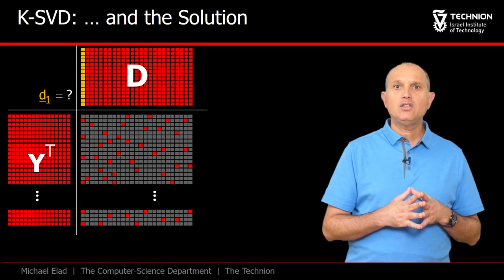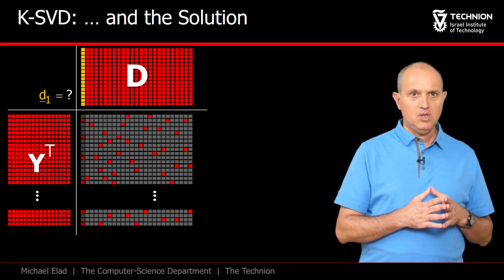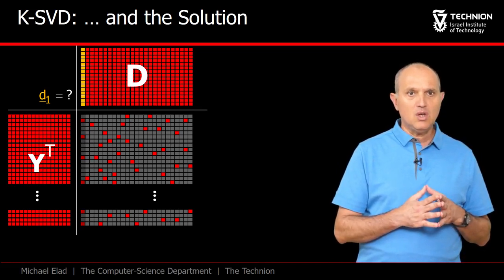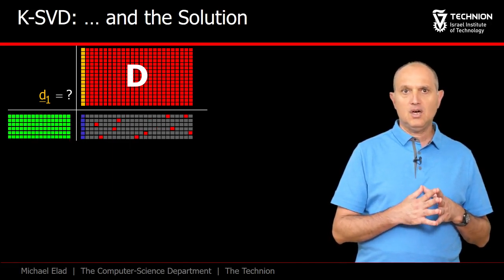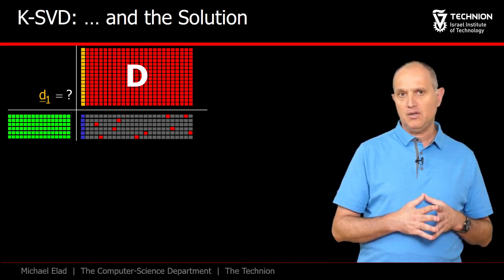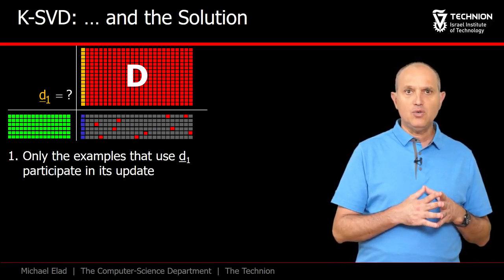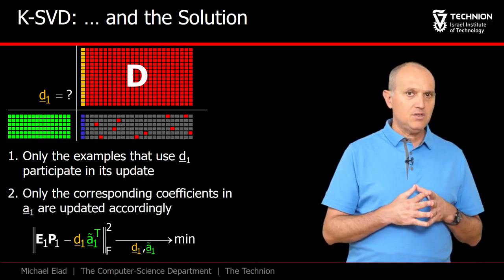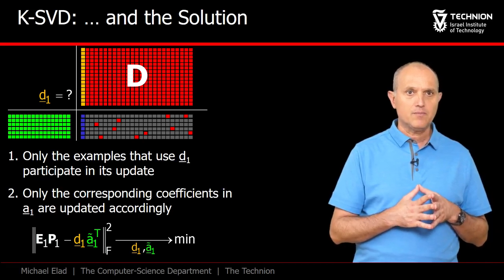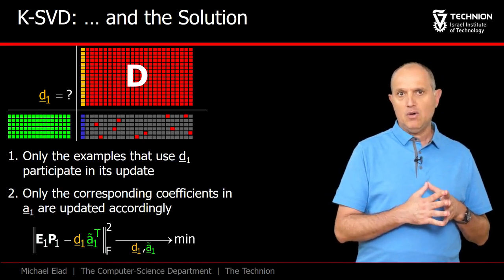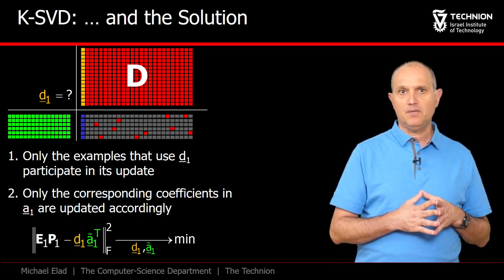The answer is to update only the non-zeros in the A1 transpose. When we look at the examples, we should consider only those that use D1, and only they get to vote for its new value. Thus, we should discard all the rest of the examples as shown here. This way, only the relevant examples influence the new choice of D1. Algebraically, this is achieved by the operator P1, which removes the irrelevant columns from E1. The vector A1 tilde is the non-zero portion that we are to update together with D1.